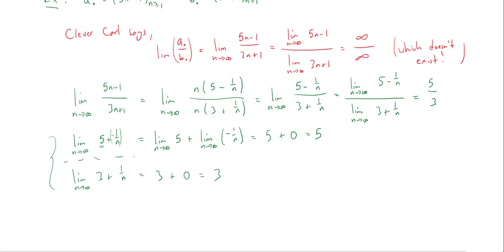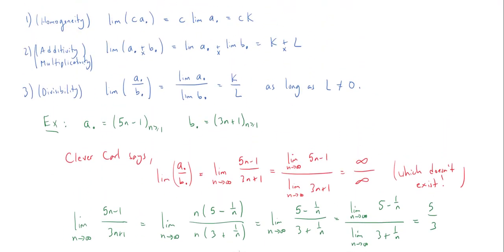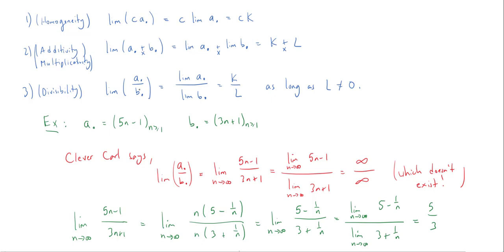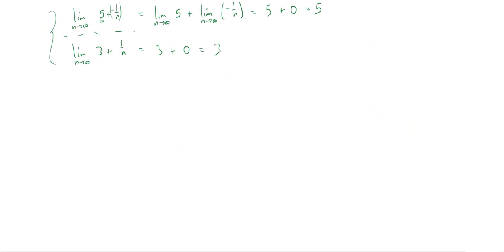Let's go back and address a technical issue with the divisibility part of the algebra of limits theorem. If sequence b has some zero terms, then defining the sequence a over b doesn't even make sense — you'd have terms like three over zero or five over zero, which is undefined. The way we handle this is to look at the tail of the sequences and cut off the parts of a and b where b has a zero term.